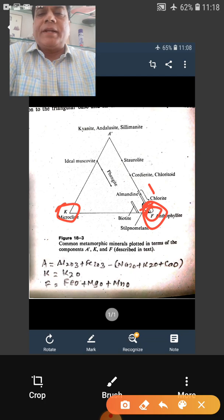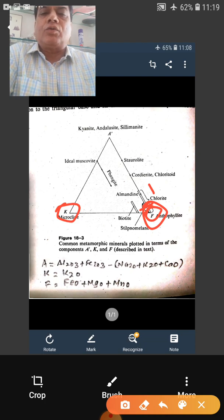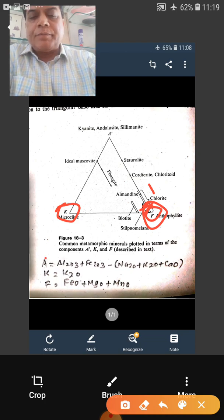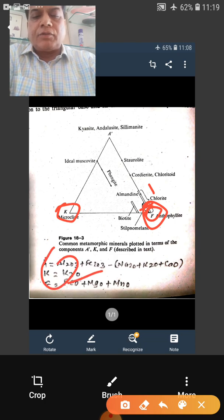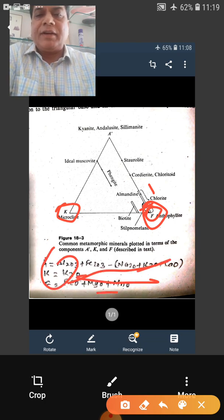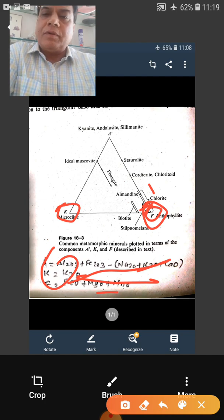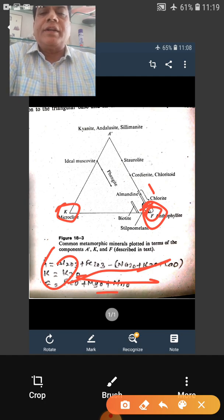Then you have to calculate the AKF values and then you have to plot on the AKF diagram. The procedure just I discussed will be the first step will be that you will correct for the accessory minerals. The corrected weight percent oxide data is converted into molecular proportion. These molecular proportions they will be put in the equation. A, K and F the values will be in molecular or in decimal forms.